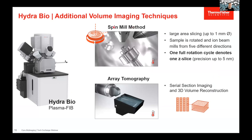One technique I want to explain quickly is the spinmill method — a technique for large-area 3D slicing. You can compare it somewhat to serial block-face microscopy techniques where a knife edge slices down through the sample. Here, instead of a knife edge, we utilize the plasma FIB ion beam to mill down or slice a block of sample. The sample is rotated under the ion beam — not continuously, but five different orientations are sufficient — to thin the sample. We can thin the sample to a Z-step of up to 5 nanometers. This is only possible with the plasma FIB because it can remove such large-area material.